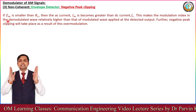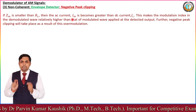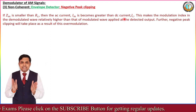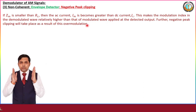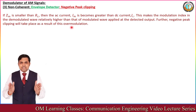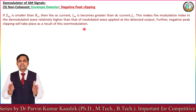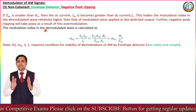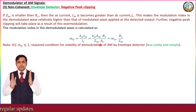As per the fundamental of envelope detector, ZM is smaller than RL load resistance. With this fact, the AC current IM becomes greater than DC current IC, and this makes the modulation index in the demodulated wave relatively higher than that of the modulated wave applied at the detector input. Due to this fact, the negative peak clipping will take place.